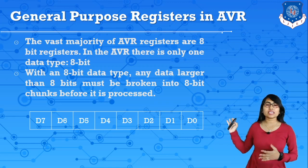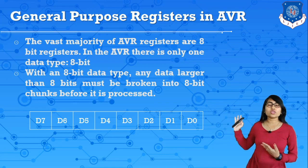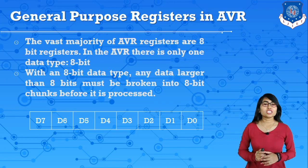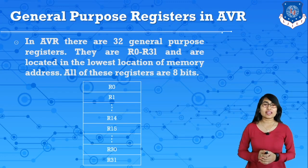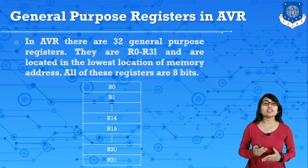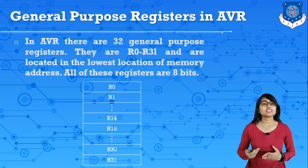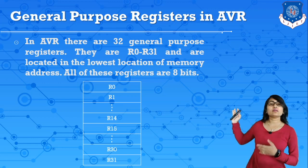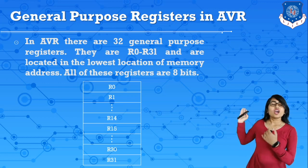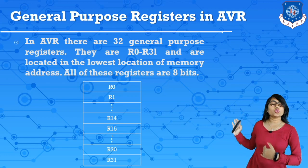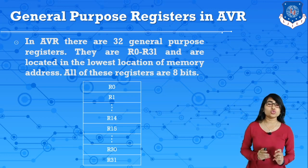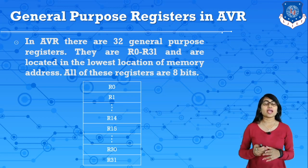Here we have a basic diagram for general purpose registers. Each register has 8 bits: D0, D1, D2, D3 up to D7. In AVR there are 32 general purpose registers, R0 to R31, located at the lowest locations of the memory address. All of these registers are 8-bit. These R0 to R31 registers can be used for different arithmetic and logical operations.